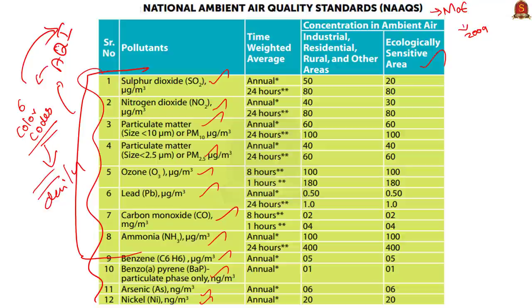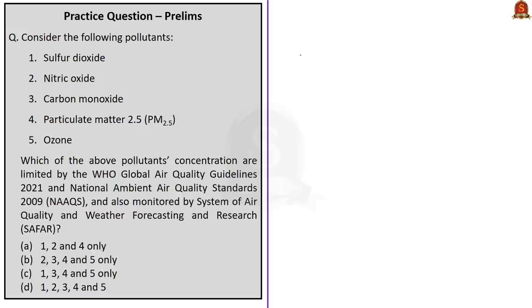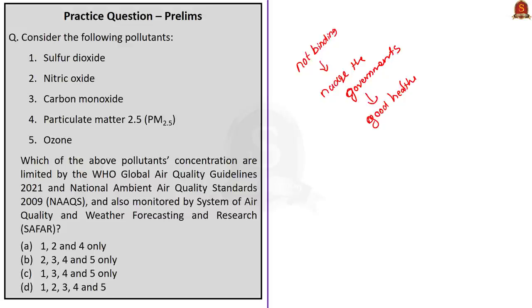Looking at the table, India has set limits higher than those set by WHO. The national air quality standards do not meet WHO's previous standards and definitely do not meet the updated standards either. But WHO updated the new guidelines because, although not binding, it will help pressurize governments to set new limits and achieve reduction of air pollutants, thereby increasing the health of citizens.